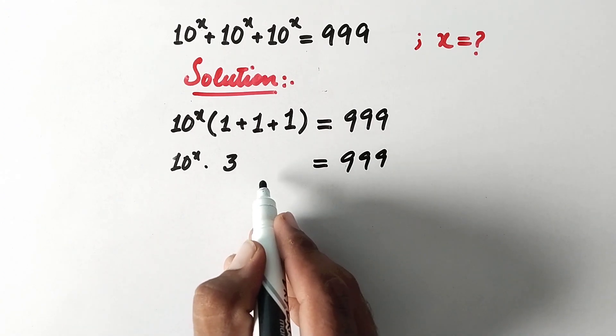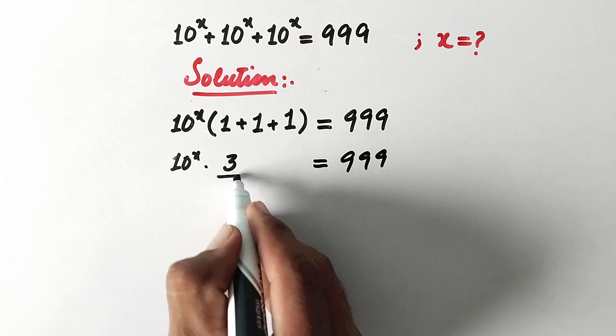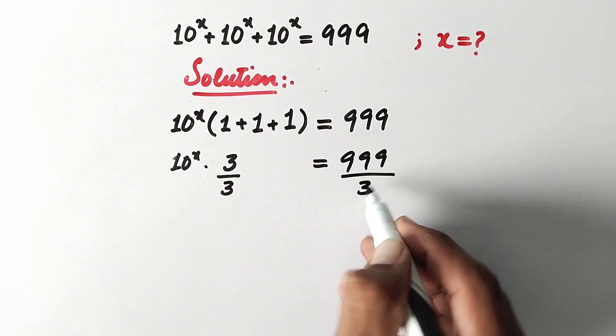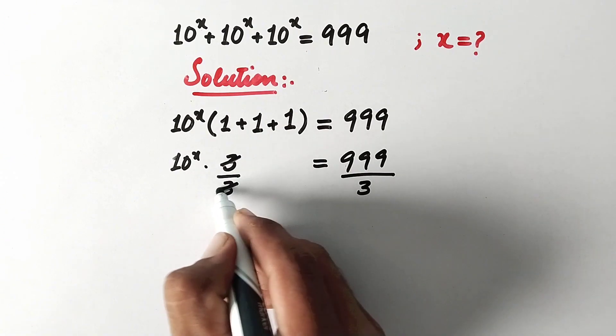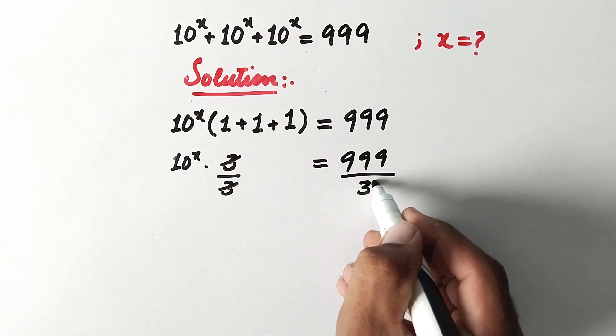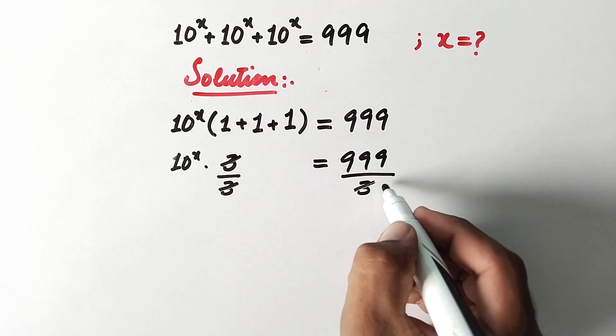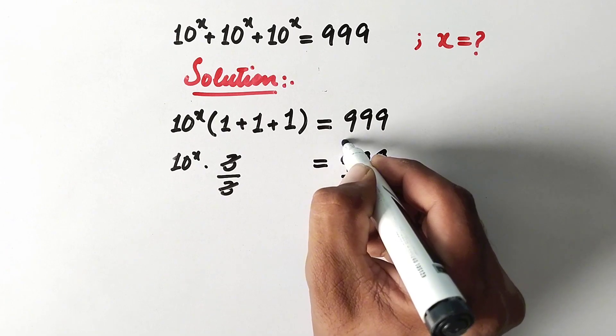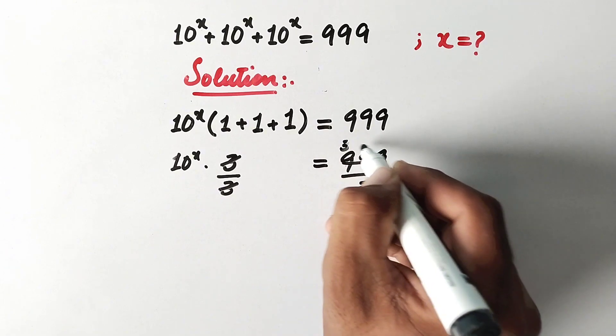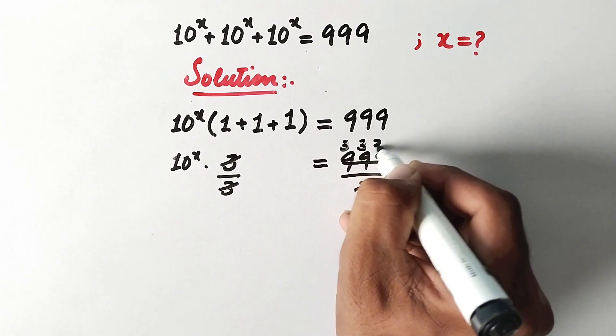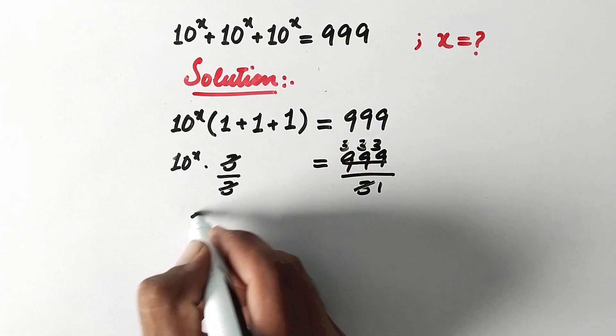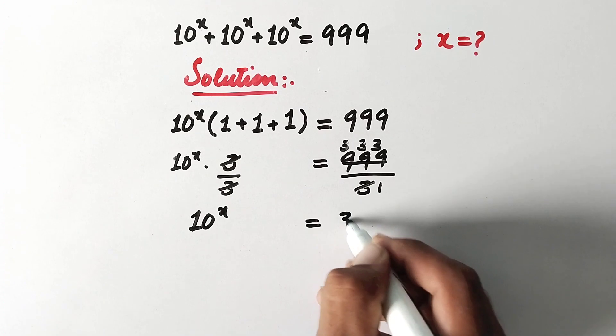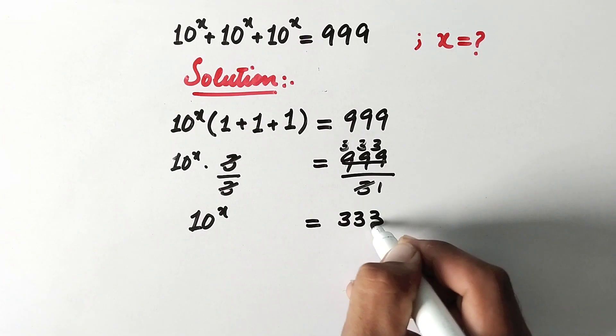So now to eliminate this 3, we will divide both sides by 3. This 3 will cancel out this 3, and 3 times 1 is 3. And here 3 times 3 equals 9, same here and same here. So 10 to power x equals 333.